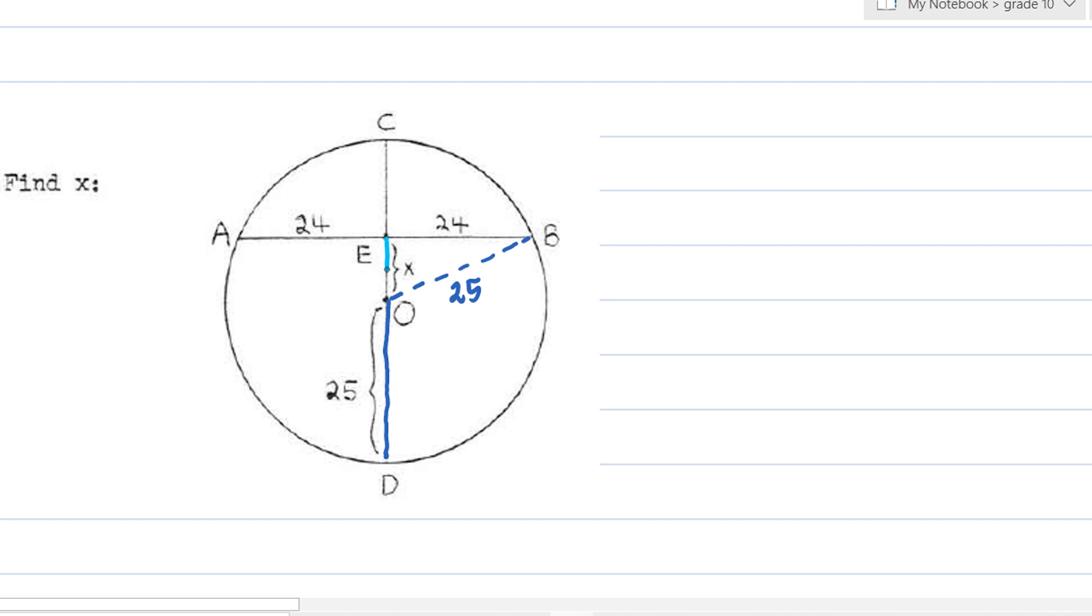Now, as you can see, we have a right triangle over here. And since we have a right triangle, we can apply the Pythagorean theorem. Our hypotenuse is OB. So we have OB squared is equal to EO squared, which is X, plus EB squared.